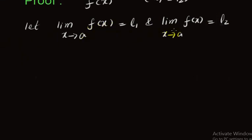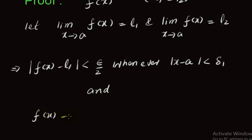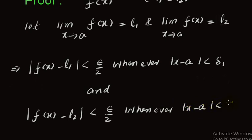We apply the epsilon-delta definition of a limit. For the first limit, |f(x) − l₁| < ε/2 whenever |x − a| < δ₁. Similarly, for the second limit, |f(x) − l₂| < ε/2 whenever |x − a| < δ₂.